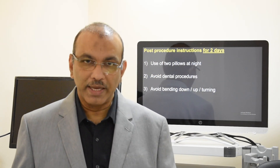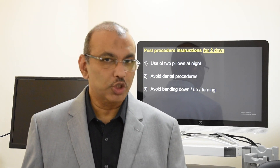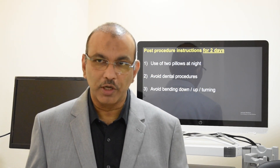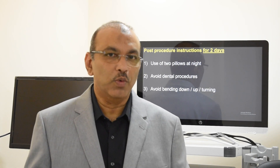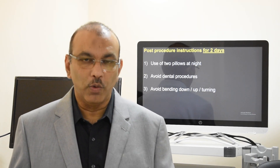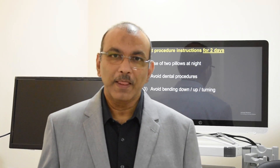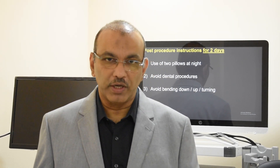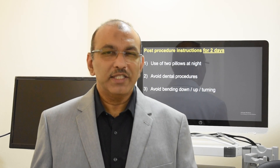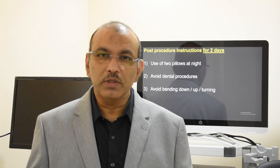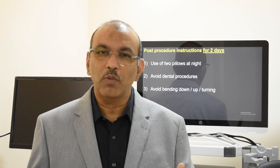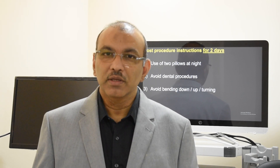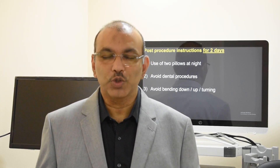To summarize, we have covered Benign Paroxysmal Positional Vertigo — one of the common causes of peripheral vertigo — including its causes, how to test for it, and what the treatment is. Some doctors may also ask for a blood test to check Vitamin D levels, which is of recent importance. Thank you so much.